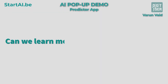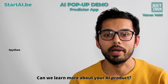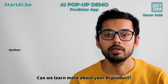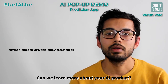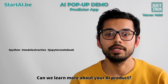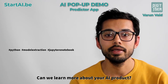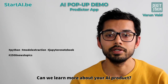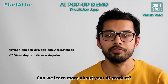Can we learn more about your AI product? Python is the core building technology for my app. For model extraction and pre-training, I used Jupyter Notebook. For developing the GUI, I used Tkinter, which is an object-oriented layer on top of Tcl/Tk. For pre-training, I used 2,500 different news topics uniformly distributed among five different categories.